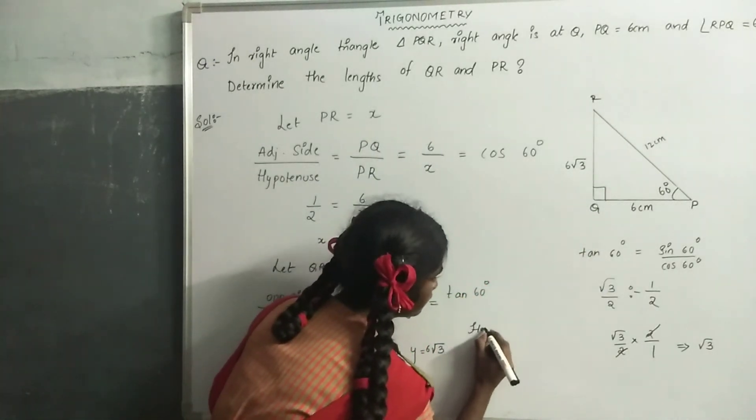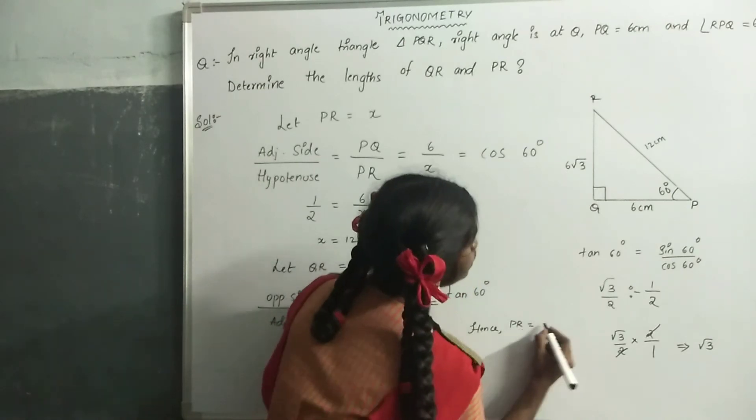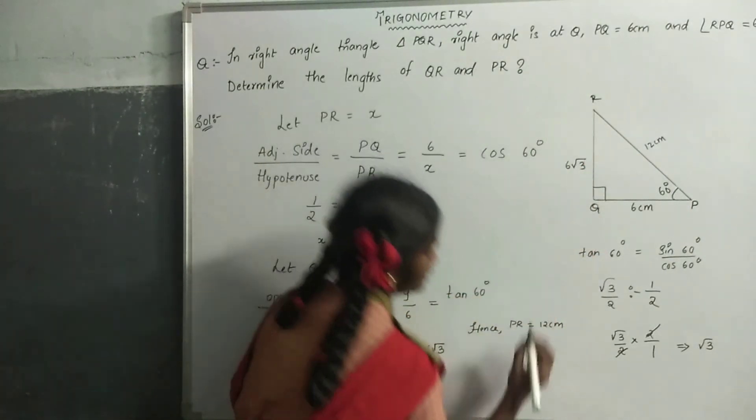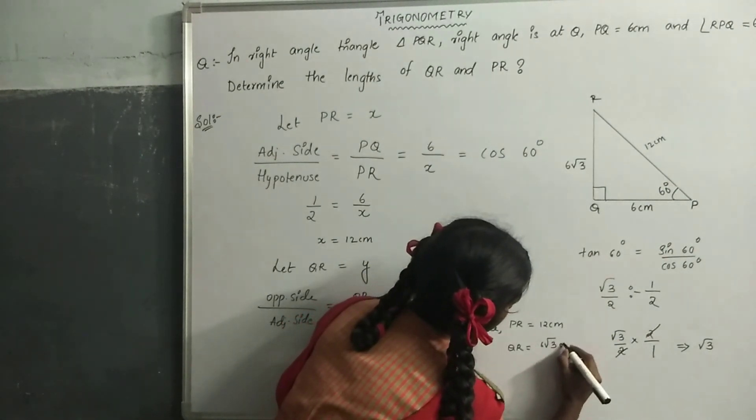Hence, PR equals 12 centimeters and QR equals 6 root 3 centimeters.